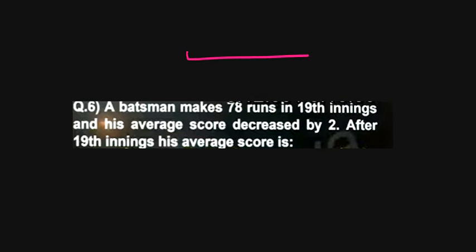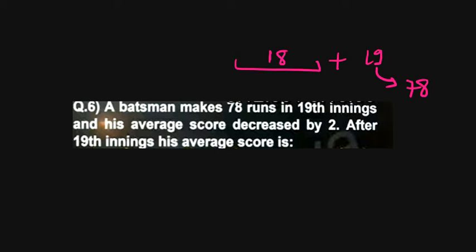So the batsman makes 78 runs in the 98th inning. Let the average before be x, so the new average is x minus 2. He makes 78 runs, and the average decreases by 2. So how much is it?